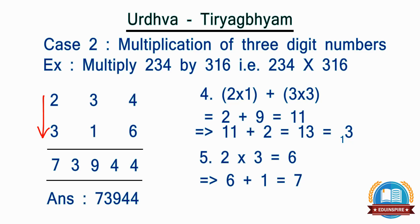As a general rule, we saw that we start from the rightmost digits and keep multiplying them vertically or diagonally — first taking the last digit, then progressively including more digits, until the first digit. We can keep extrapolating this sutra for higher digit numbers too.